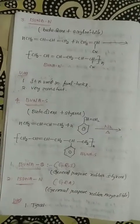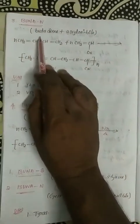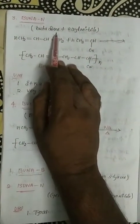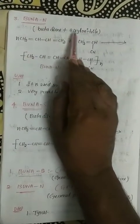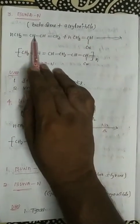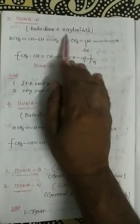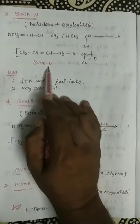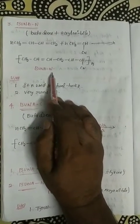Another synthetic rubber is Buna-N. Here, BU stands for butadiene, NA stands for sodium, and N stands for acrylonitrile. The combination of butadiene and acrylonitrile forms Buna-N, which is one of the synthetic rubbers.